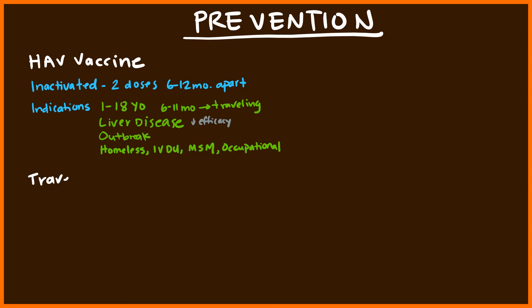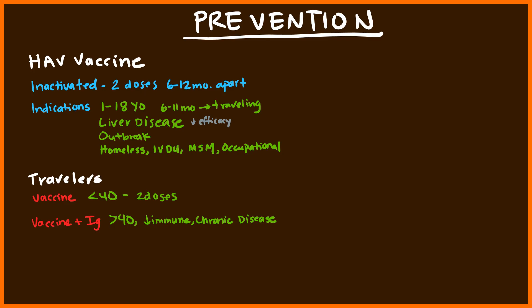For travelers going to a third world country, they should receive the vaccine. If they're less than 40 years old, two doses six to 12 months apart, just like a regular vaccination. However, some individuals should receive both the vaccine and the immunoglobulin — always at two separate sites. Those who should get both are individuals above the age of 40, with a weakened immune system, any chronic disease, liver disease, or if they don't have enough time to get two vaccine doses — the vaccine and immunoglobulin help mount immunity quicker.